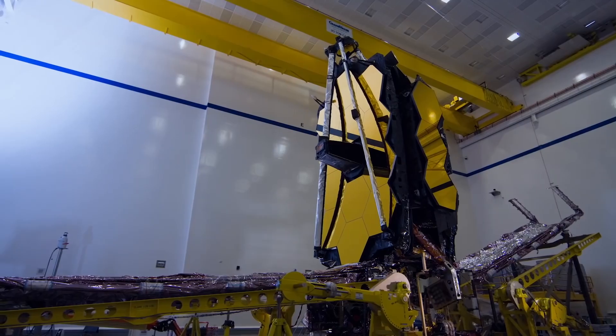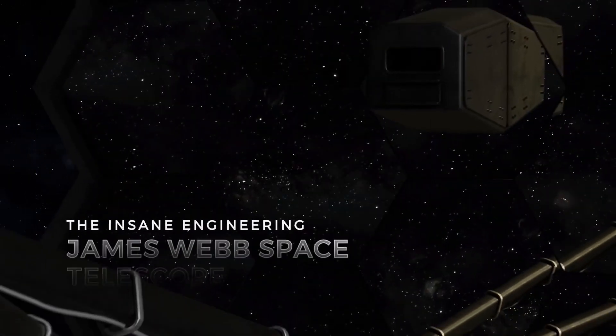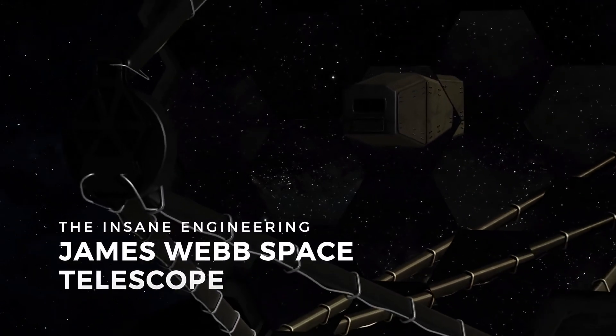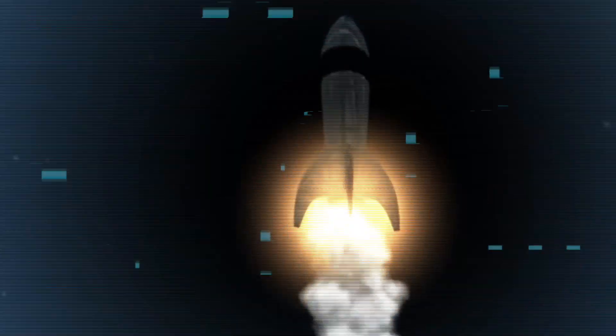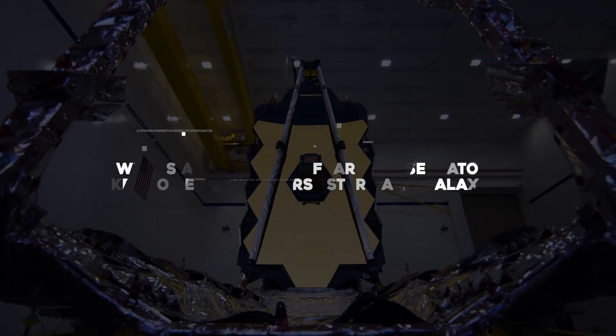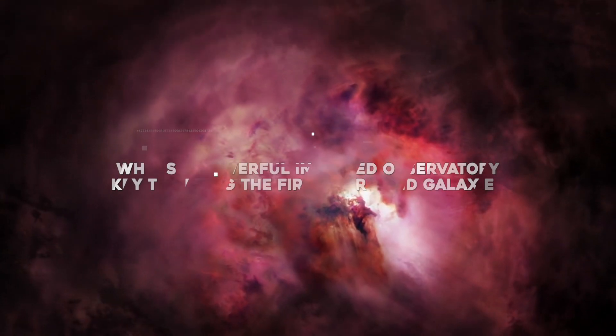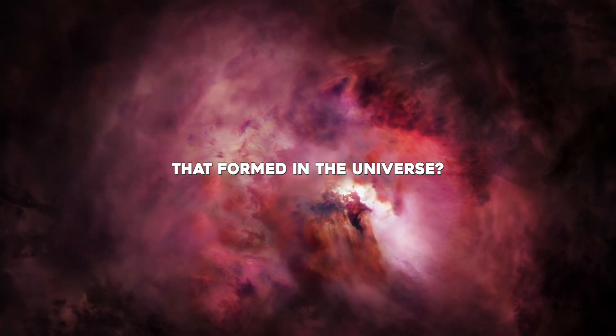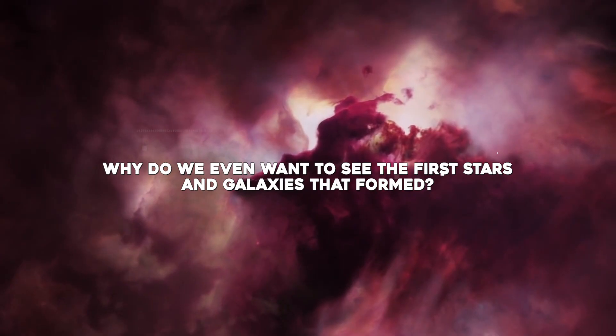The launch of the James Webb Telescope has been one of the most remarkable events in history because of the high hopes associated with it. Its creators believe that this mighty telescope will unravel the greatest mysteries of the universe. So why is a powerful infrared observatory key to seeing the first stars and galaxies that formed in the universe? Why do we even want to see the first stars and galaxies that formed?